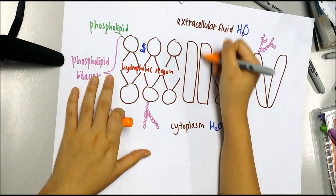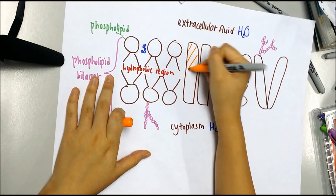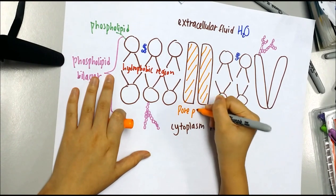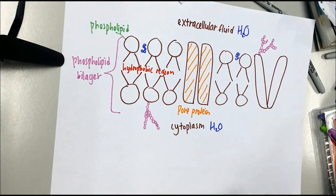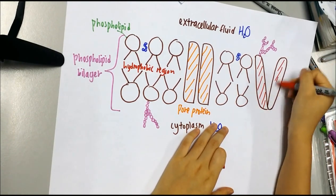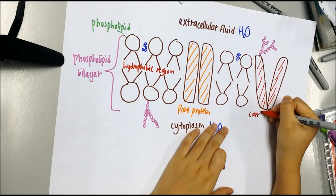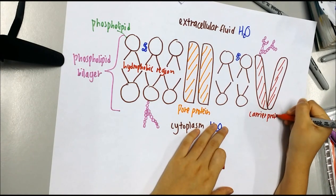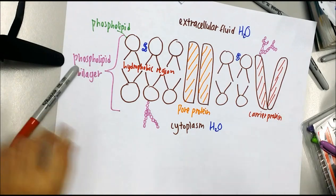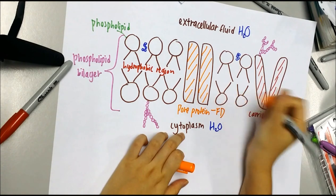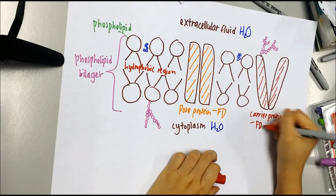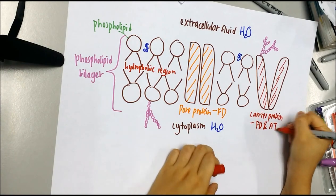The protein that has a pore in between is known as pore protein, while the protein that looks like a V-shape is known as carrier protein. Pore protein is important in facilitated diffusion, while carrier protein is important in both facilitated diffusion and active transport.